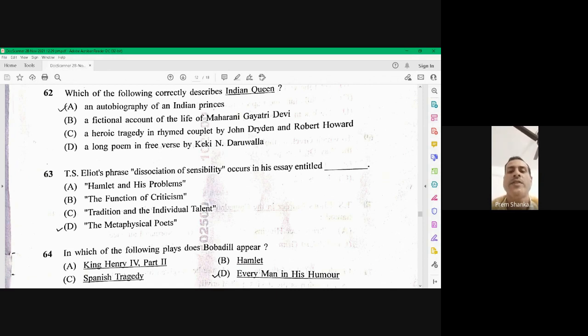Question number 64. In which of the following plays does Bob Adil appears? So Bob Adil appears in Every Mining is Humor by Ben Johnson.